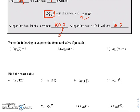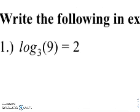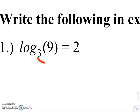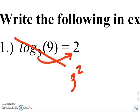So if we're writing these in exponential form, the 3 will swing over, and that's how we undo the log. This becomes 3 squared.